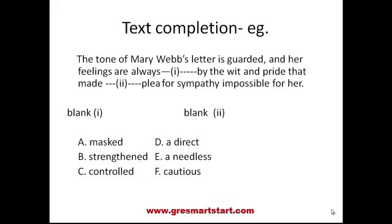For the second blank: 'by the wit and pride that made a [blank] plea for sympathy impossible for her.' The parts of the sentence are always connected. Since the tone is guarded and her feelings are masked, if she has concealed the tone and feelings, you cannot have a direct communication. So the answer is 'direct.' Here, A is the correct answer for the first blank and B for the second. Note that D, E, F do not necessarily match with A, B, C — so you can have answers like B and D, A and F, or C and D. If you are not yet familiar with the GRE format, even if you mark A correctly but go wrong on the second blank, you get no points. The question must be answered correctly in totality — partial correctness doesn't fetch any marks. You need to be really comfortable with these questions to ensure your answers are fully right.